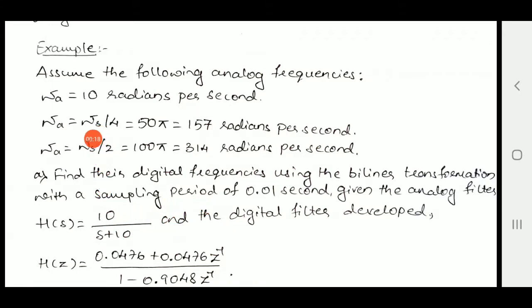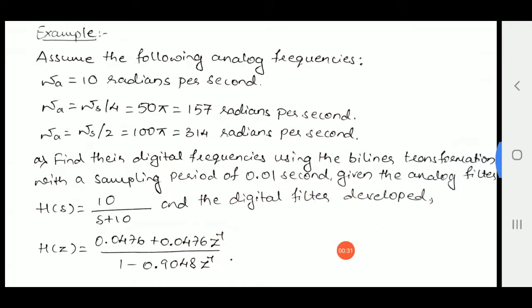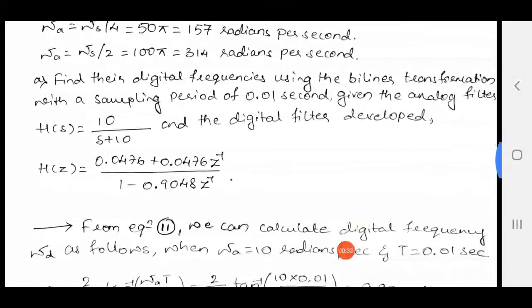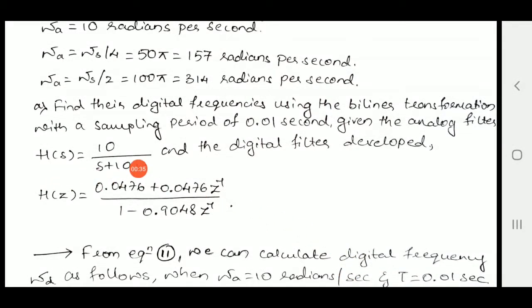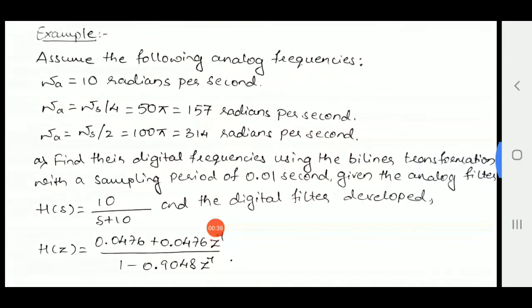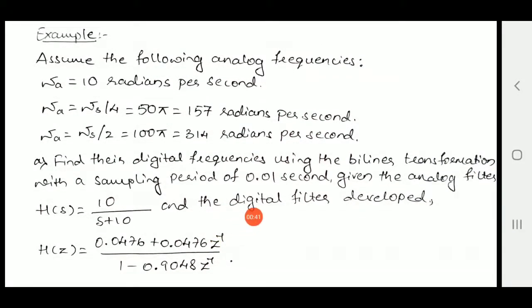The values are given. Here W_s is the sampling frequency. How to find their digital frequencies using the bilinear transformation with the sampling period of 0.01 second given the analog filter and the digital filter developed? Here, the function for analog function is also given and the function for digital is also given, but the question asked is just to find the digital frequencies.